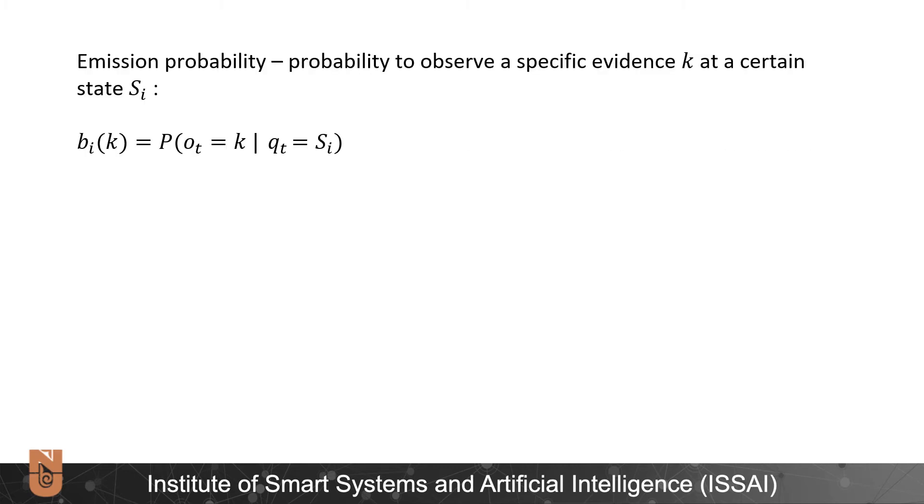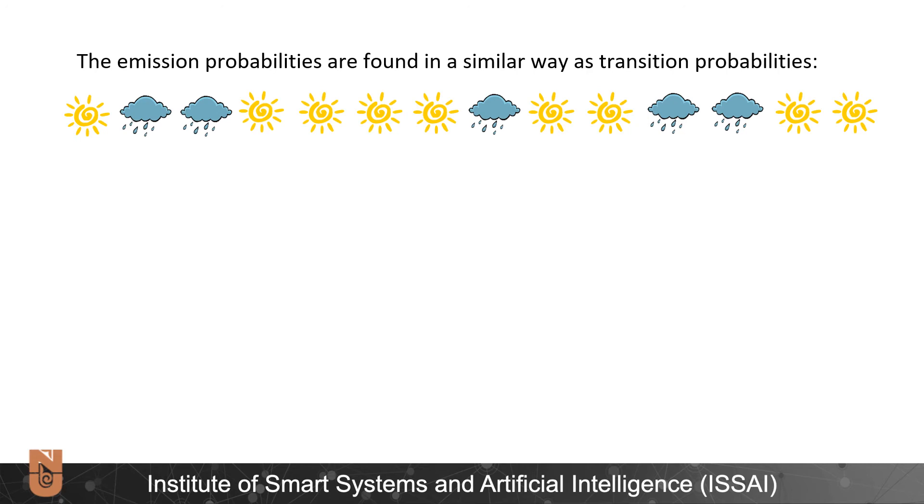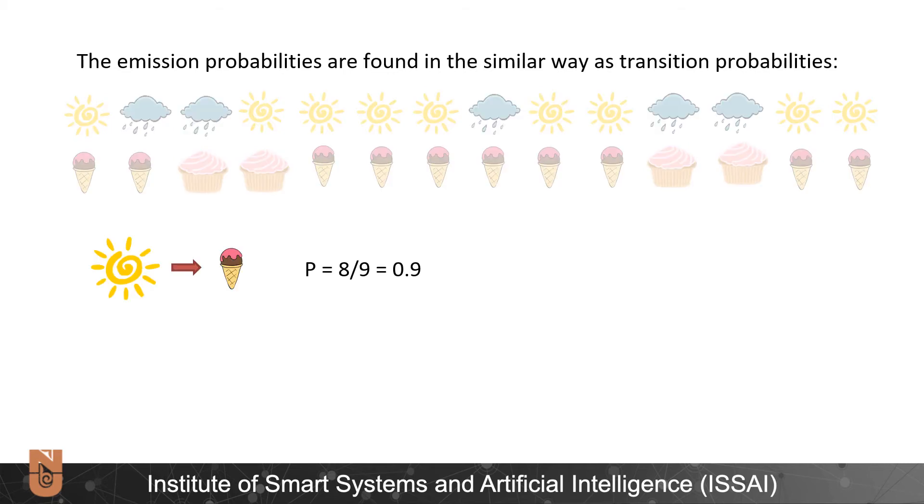Let's denote emission probability b as a probability to observe a specific evidence k at certain state i. Emission probabilities are found in the same way as transition probabilities. Here we can see the same chronological weather data with a dessert type with the largest sold number at each day. In nine sunny days ice cream have been mostly sold for eight days so the probability is 0.9. Therefore the probability of observing cakes being preferred on a sunny day is 0.1. The emission probability of ice cream being preferred on a rainy day is 0.6.